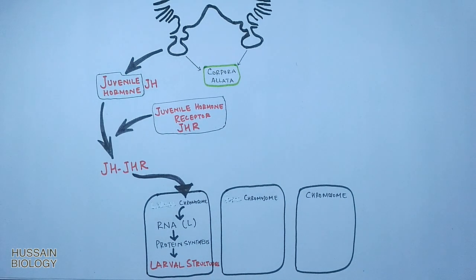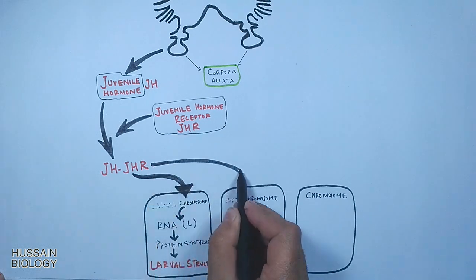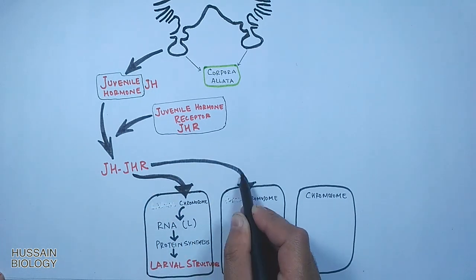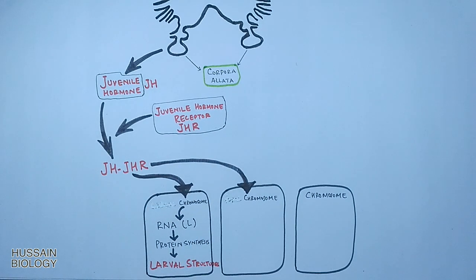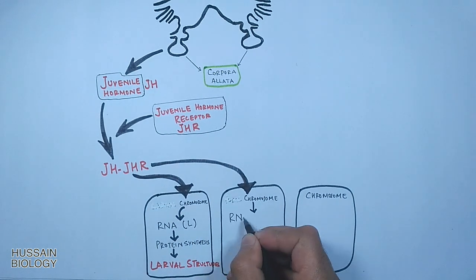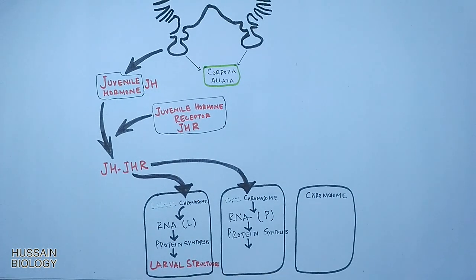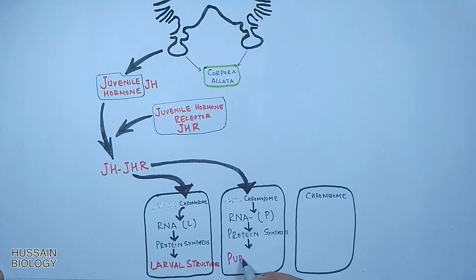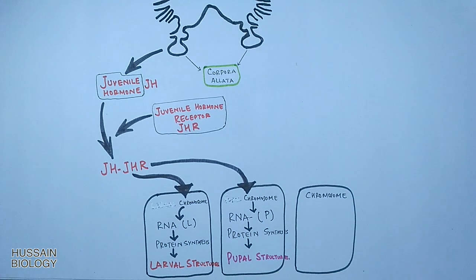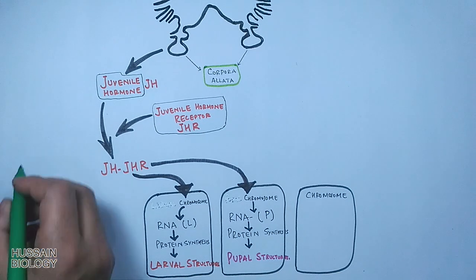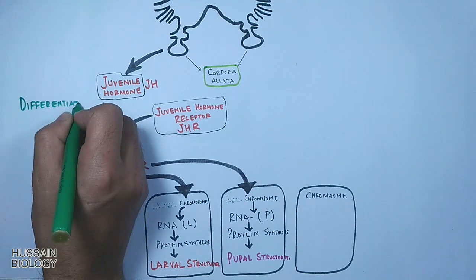Juvenile hormone also drives the expression of pupal structures in the cell, but only at low concentrations and when 20-hydroxyecdysone is present. This forms the differentiating signal.